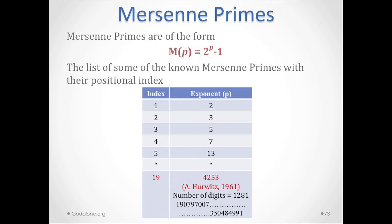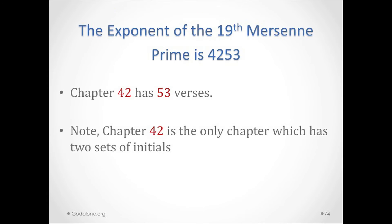The exponent of the 19th Mersenne prime is 4253. Chapter 42 has 53 verses.